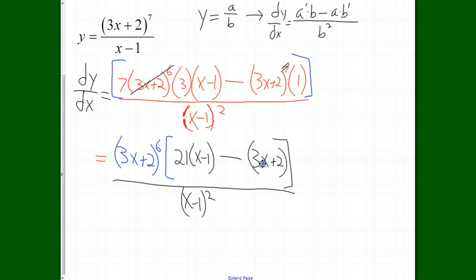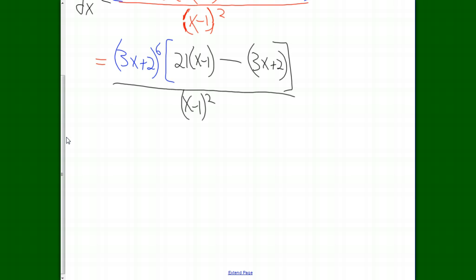Let's raise the page up a little bit here. So from here, in this bracket, we can simplify some stuff. So this 3x plus 2 to the sixth power, that's just going to stay out there. Inside of this bracket, we got 21x minus 21. And we are subtracting 3x plus 2. So we're subtracting each term. Minus 3x minus 2. All of this is still over the x minus 1 quantity squared.